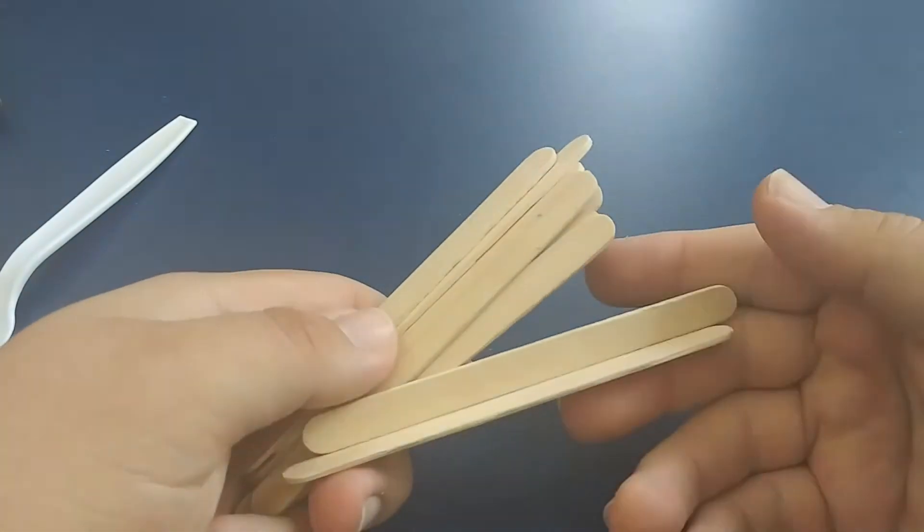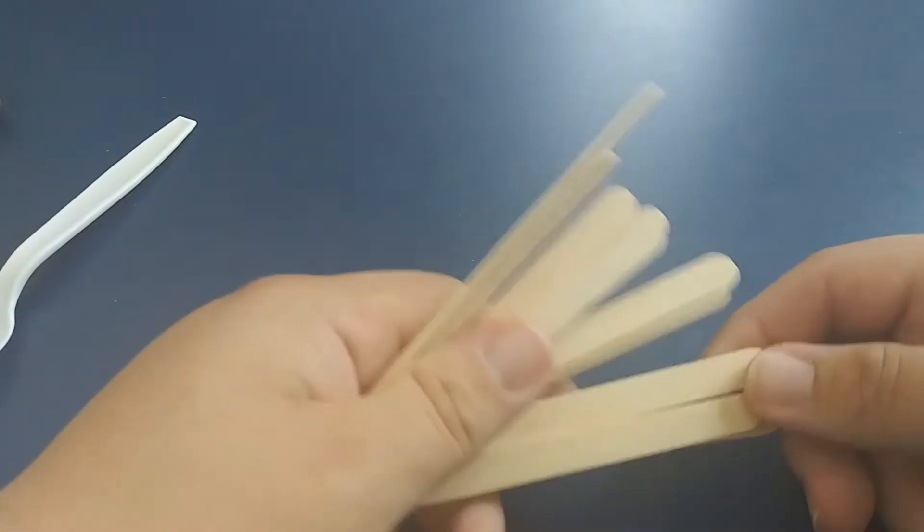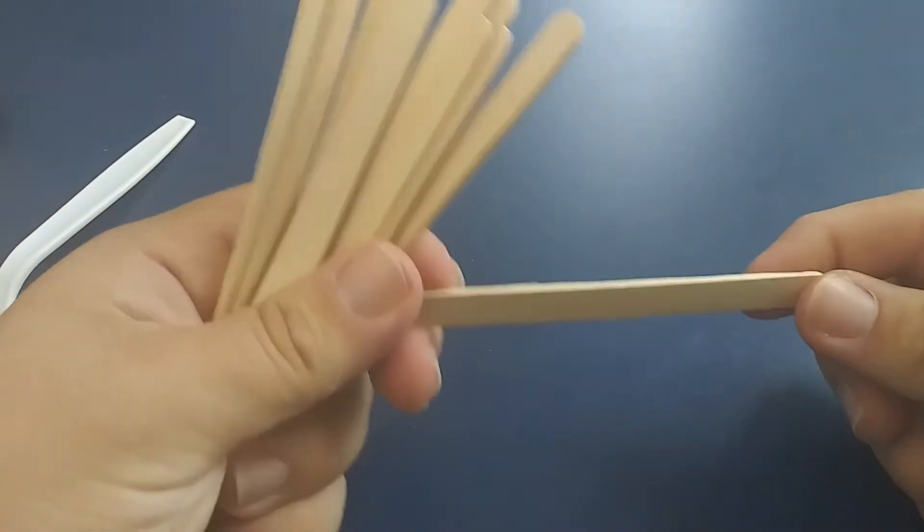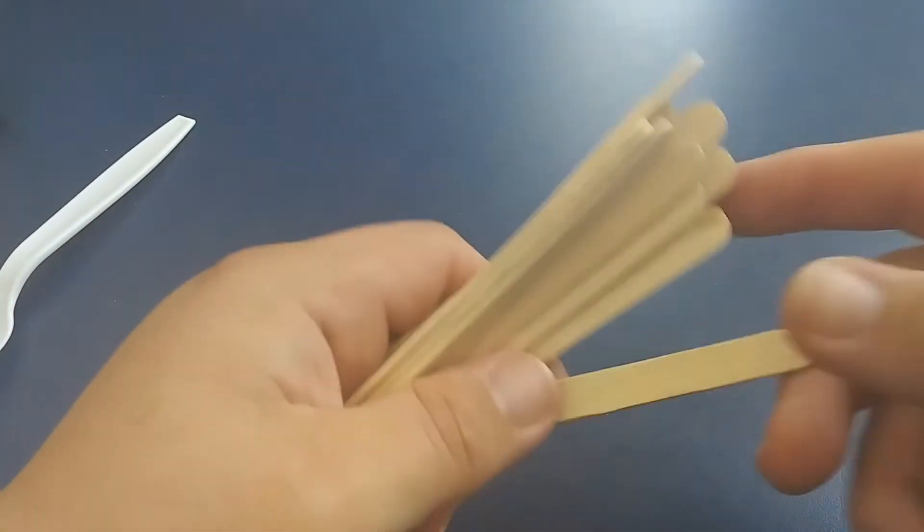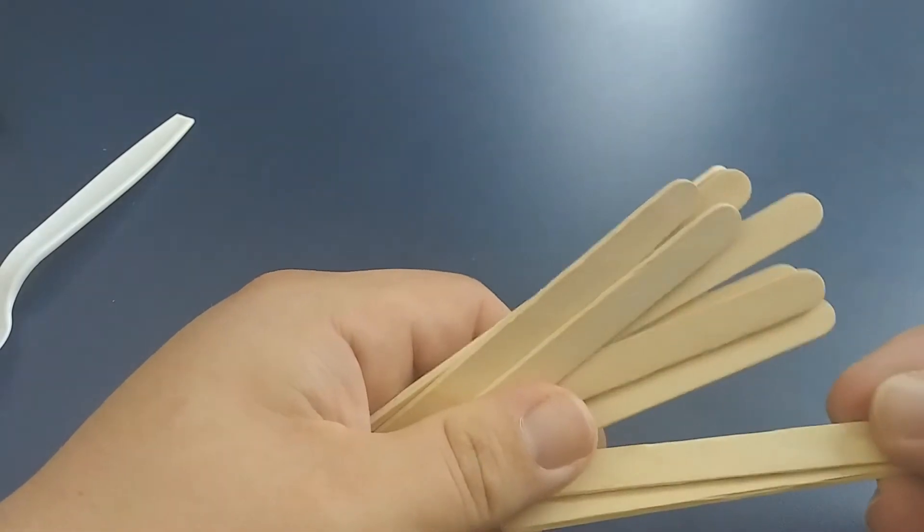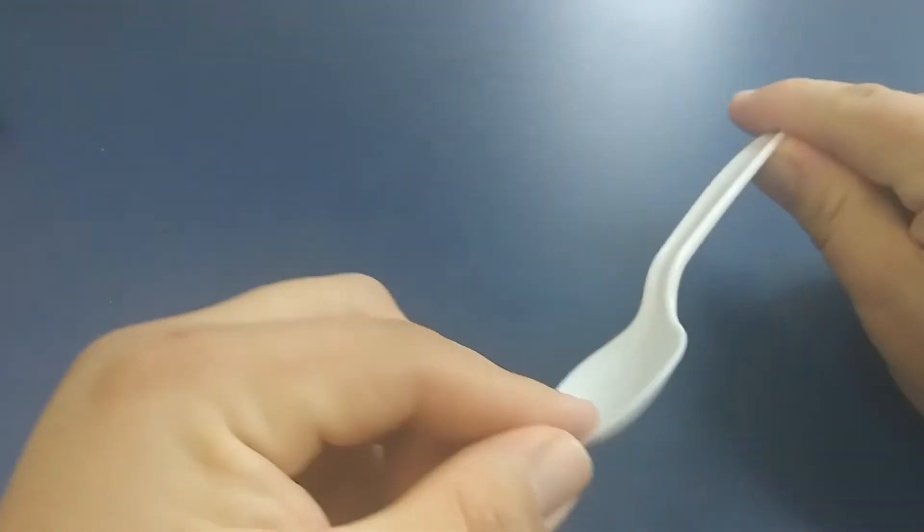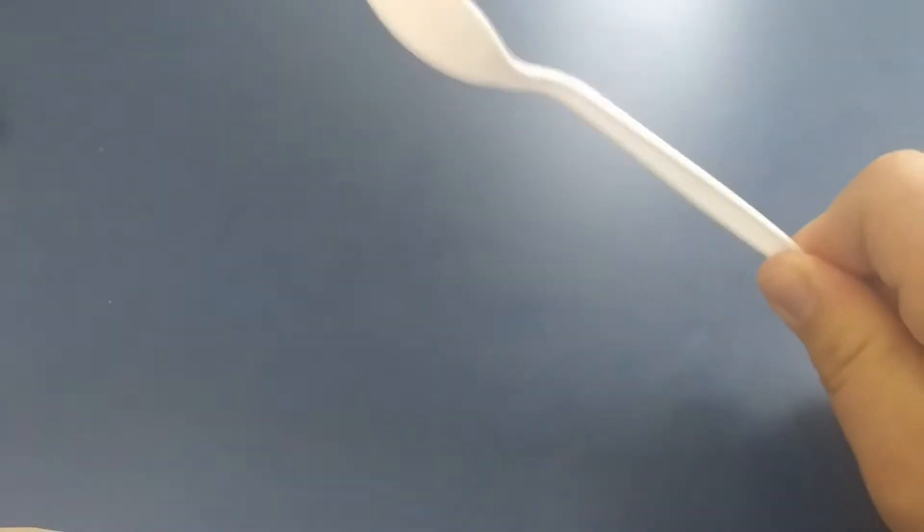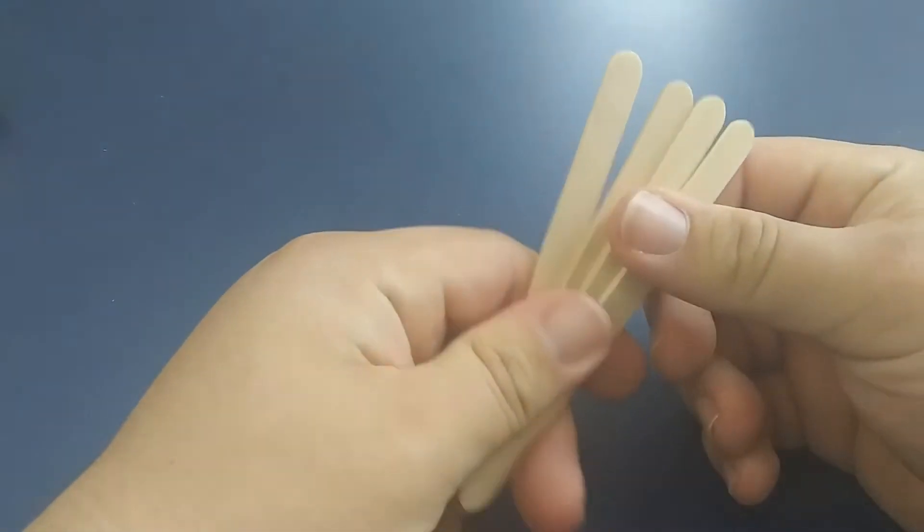Next we've got ten popsicle sticks. Just like the rubber bands, in case these end up getting warped or broken, you can easily replace one. We're only actually going to need eight of these. And lastly, a trusty plastic spoon.